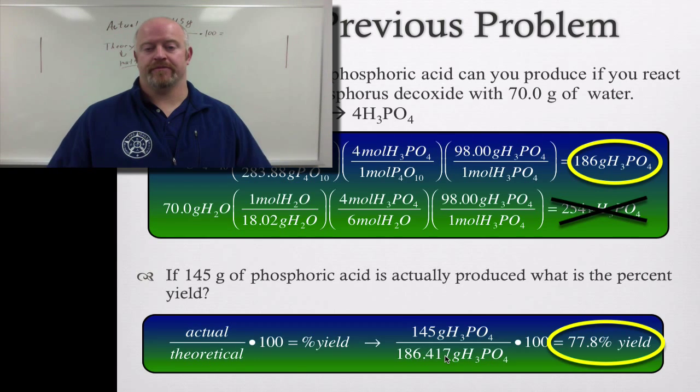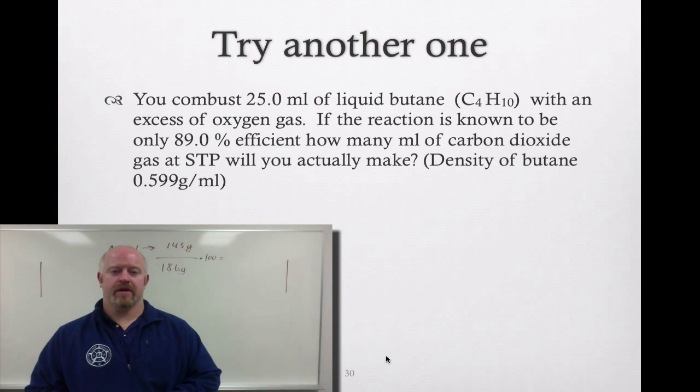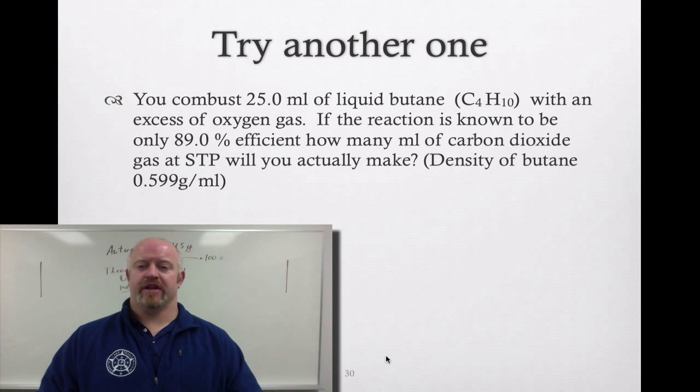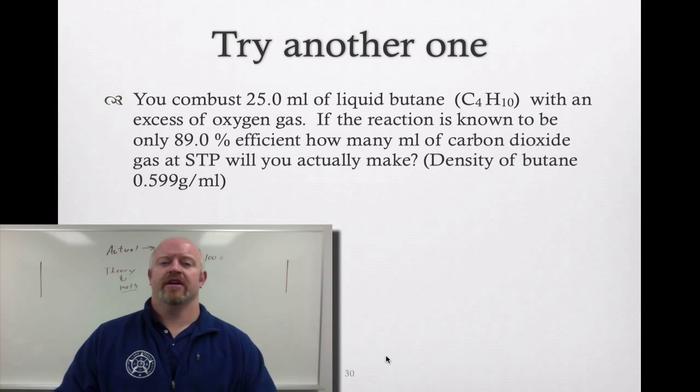Here's another one that we're going to try. You combust 25 milliliters of liquid butane with an excess of oxygen gas. If the reaction is known to be 89.0% efficient, how many milliliters of carbon dioxide gas at STP will you actually make? This problem, if we take a look at it, has a pretty involved stoichiometry problem with it, but it's nothing that we can't handle. So let's walk through the whole process together and then we'll actually factor in that percent yield in our answer.